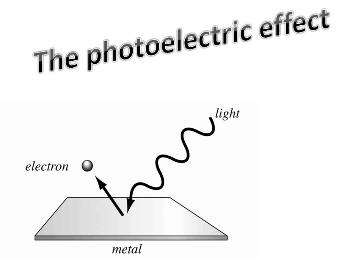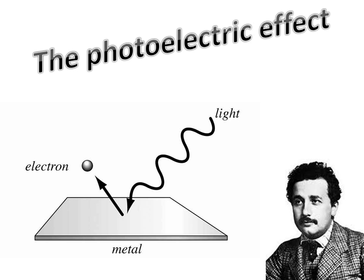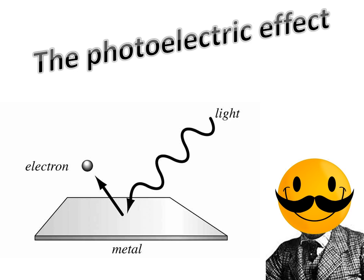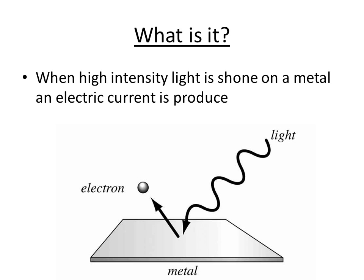The photoelectric effect gave a lot of physicists a headache in the early 20th century because they couldn't really understand what was going on. Eventually Einstein explained exactly what was going on and got a Nobel Prize for it in 1927. It's very good evidence for explaining light as a particle. What happens is when a high intensity light is shone on a metal, it releases electrons from that metal, producing an electrical current.